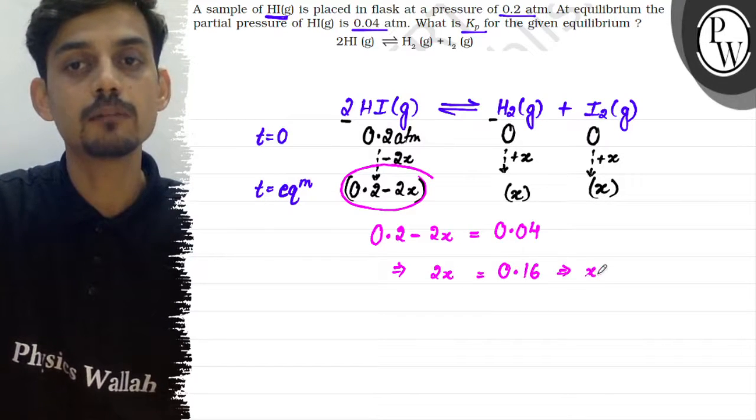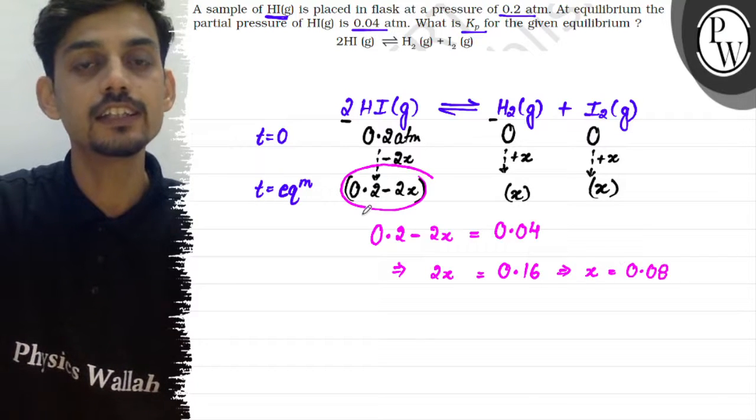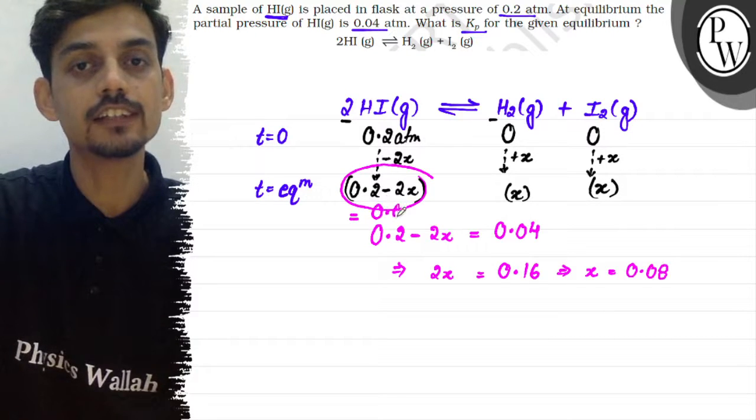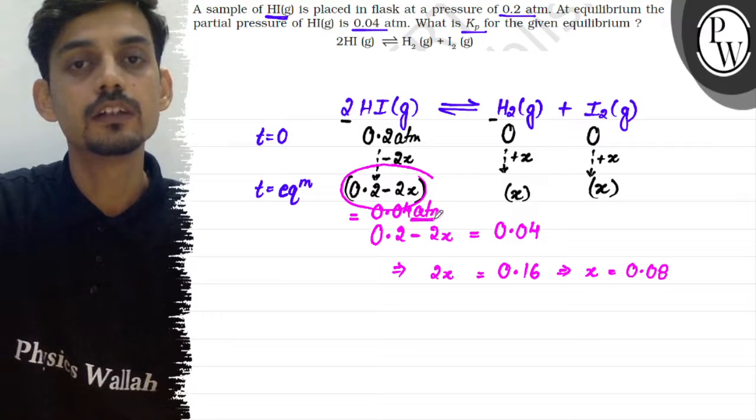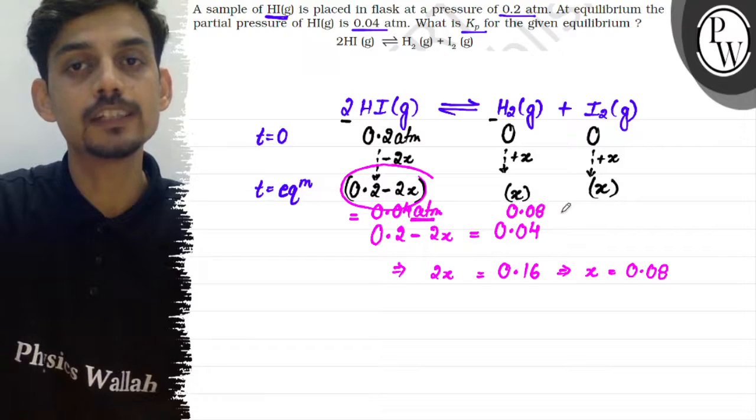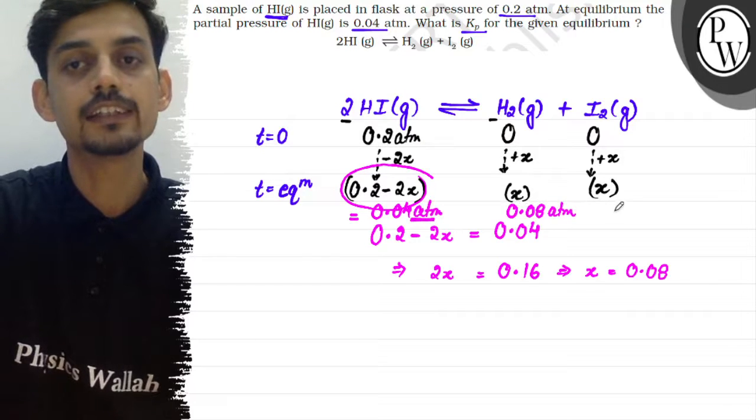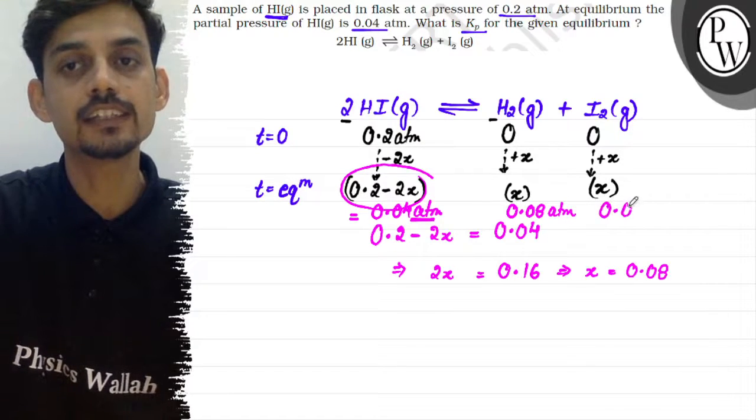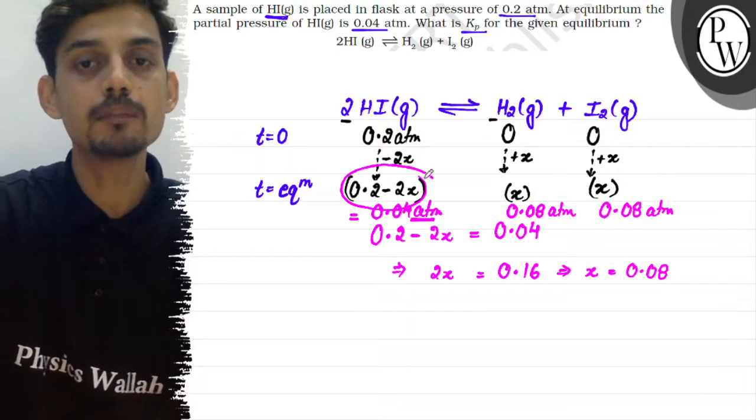So we can say that at equilibrium HI's partial pressure remaining is 0.04 atm, which is already given in the question. H2's partial pressure at equilibrium is x, so that will become 0.08 atm. Similarly I2's partial pressure is also x, so that will become 0.08 atm. Now we can find Kp.